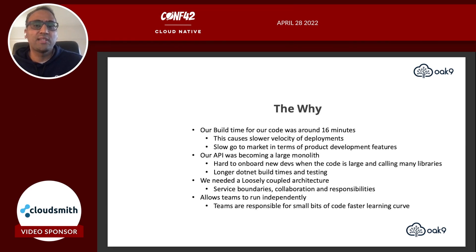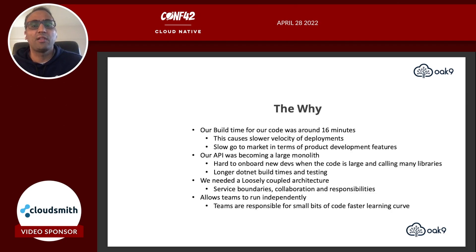Why did we decide to go to microservices? The first main reason was our build time was getting to be way too high. This causes a slower velocity of deployments and a slow go-to-market in terms of product development features. Our API was also becoming a large monolith.